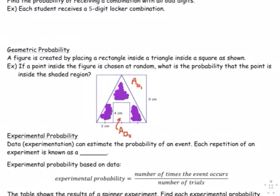In general, the probability of picking a point in the shaded region will equal the area of the shaded region divided by the area of the entire figure.